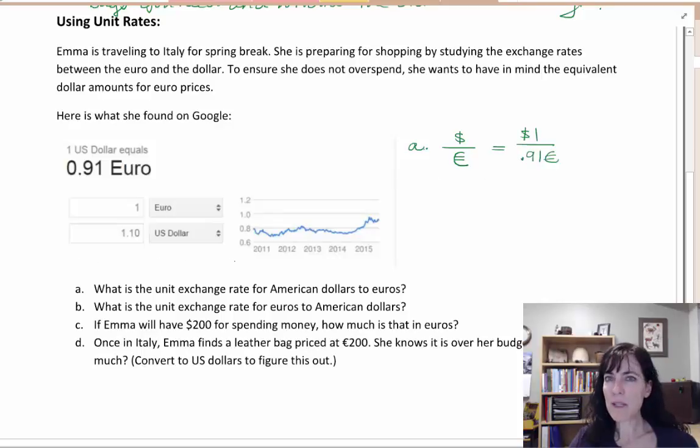Now the problem is that that's not really a unit exchange rate. That's sort of backwards. If I want to go the other way, I really need the euros, which is on my denominator, to be a one. So instead of using this one, because it's not really a unit exchange rate,